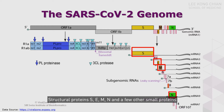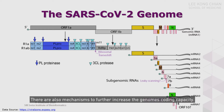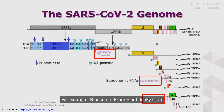Structural proteins S, E, M, and N, along with a few other small proteins with unknown functions, are expressed from the subgenomic mRNAs. There are also mechanisms to further increase the genome's coding capacity — for example, ribosomal frameshifting and leaky scanning, which occur during the translation process.